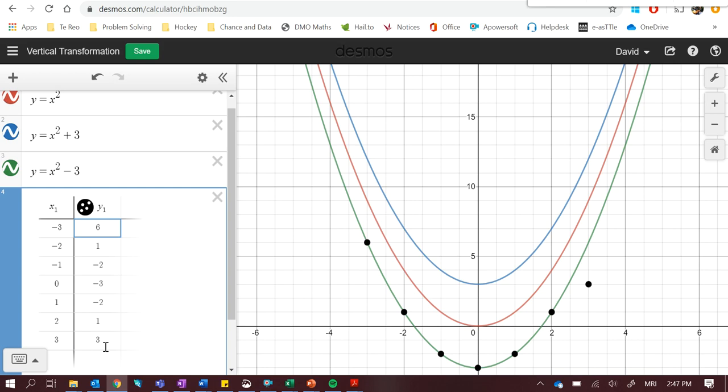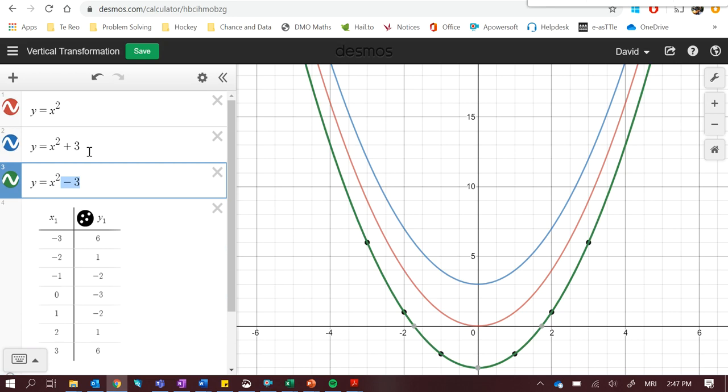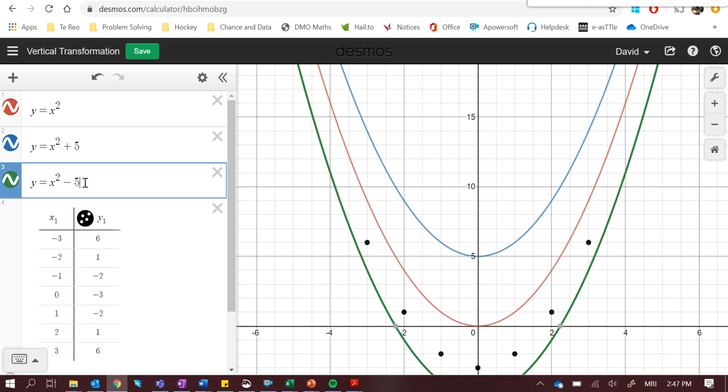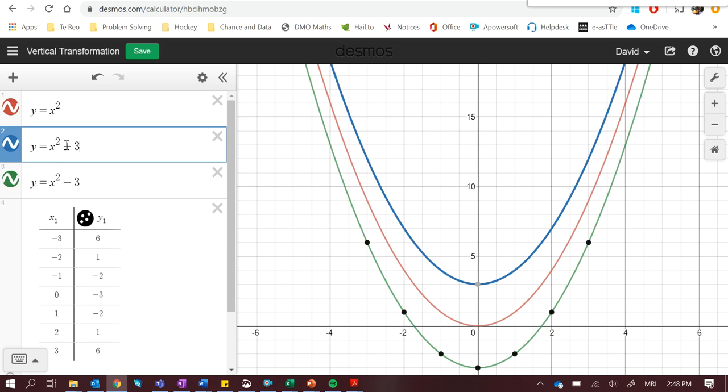So the second part of our equation here, the plus 3 or the negative 3, is the part that creates vertical transformations. It's the part that shifts the graph up or down. So if we change this value, it's going to move this up. As we increase this value, it's going to move it further and further down. So this part of the equation is the part that creates the vertical transformation. So whenever you see a value in here, after the x squared part, it tells you you're going to end up with some vertical transformation with the parabola being shifted up or down.